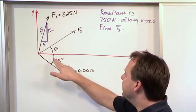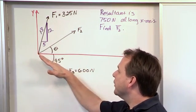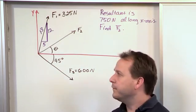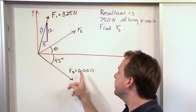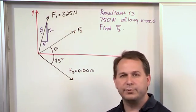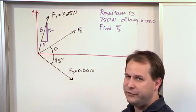Vector F3 is 600 Newtons. It's angled 45 degrees down below the x-axis. So we have two of the vectors locked down and defined, magnitude plus direction. We do not know what F2 is.